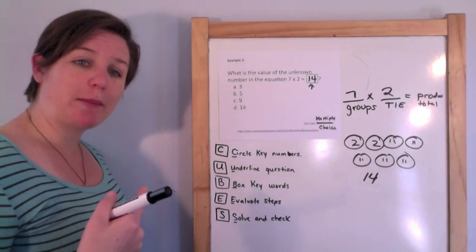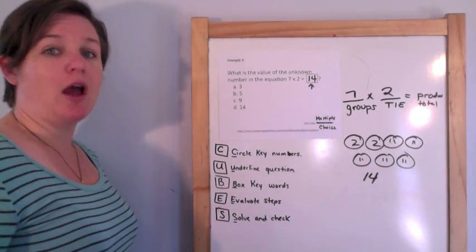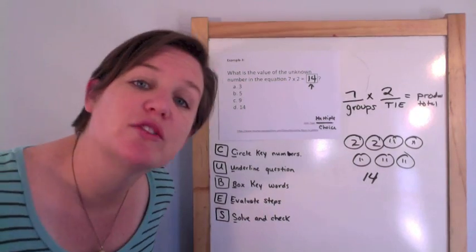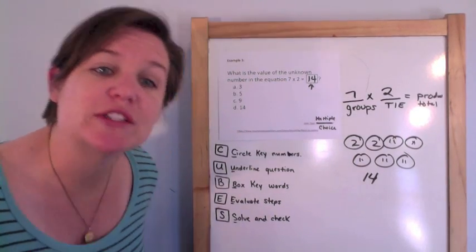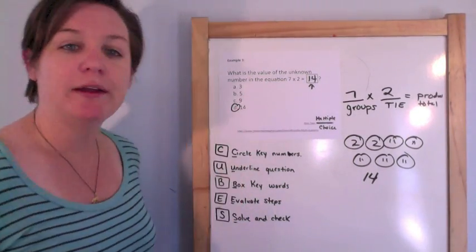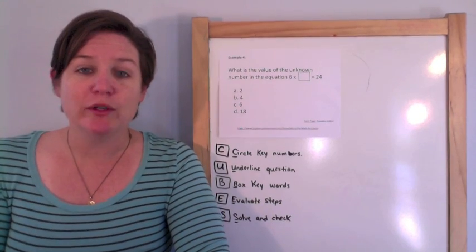If I just write my answer in the box it's going to be wrong. You need to circle the answer because it's multiple choice, or bubble it in. The answer is D.